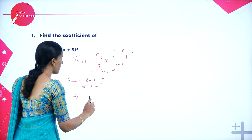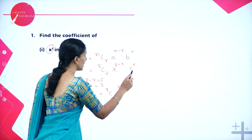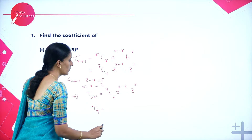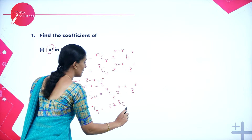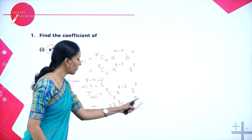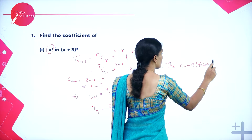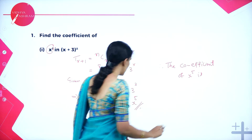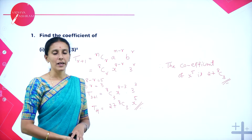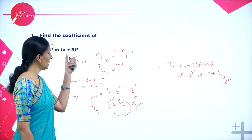Substituting r = 3: T(3+1) = 8C3 · x^(8-3) · 3^3. This is the fourth term. Since 3^3 = 27, we get 8C3 · 27 · x^5. Therefore the coefficient of x^5 is 27 · 8C3. We can solve 8C3 and multiply by 27 to find the constant coefficient.